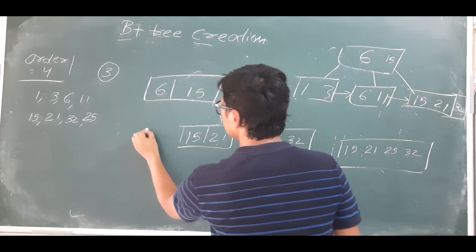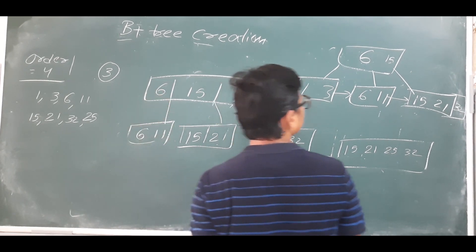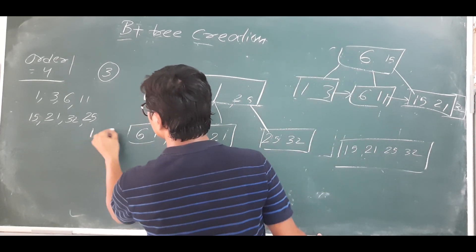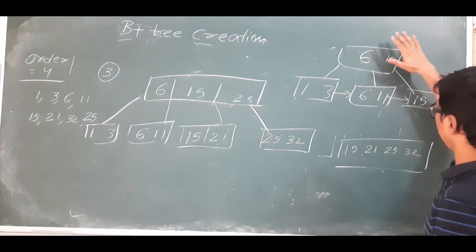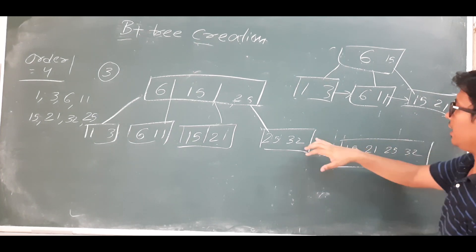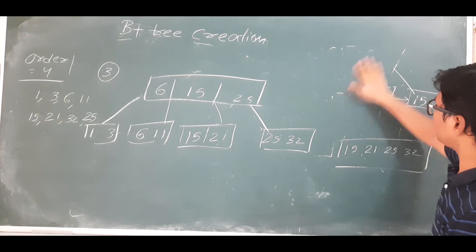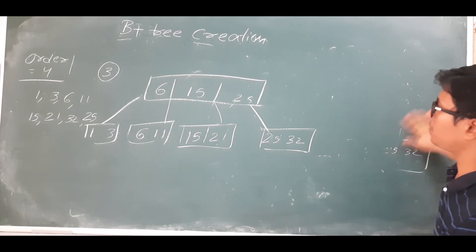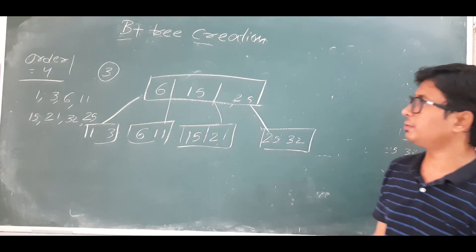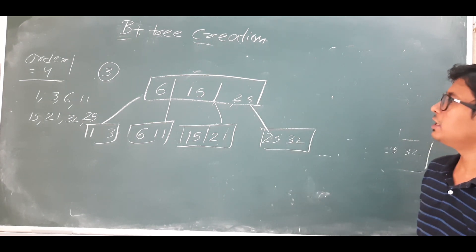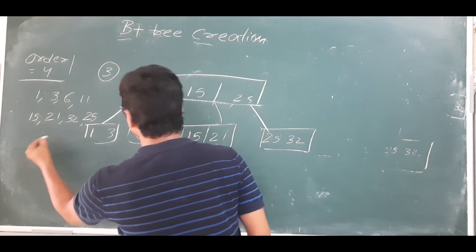To the right of 6 you have 6 and 11, and to the left of 6 you have 1 and 3. After pushing 25 to the parent node, we check whether the parent node has an overflow problem — it does not. So just for further clarification, let me insert two more elements: 38 and 41.